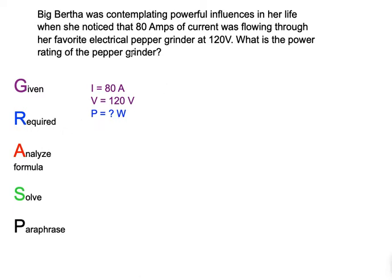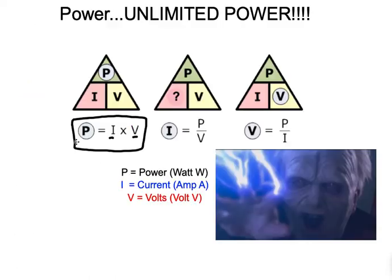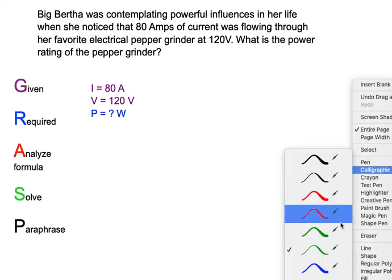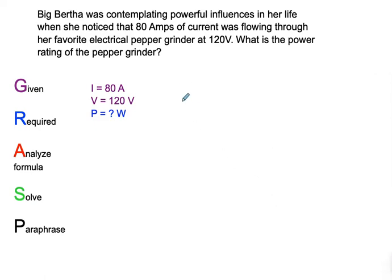R equals required. So, what is required? The question says, what is the power rating of the pepper grinder? So, P equals question mark. We're given that formula, so we don't have to cover P and see that it's I beside V. But we could do that if we needed to. All we would need to do is write down the formula, which is P equals I times V.